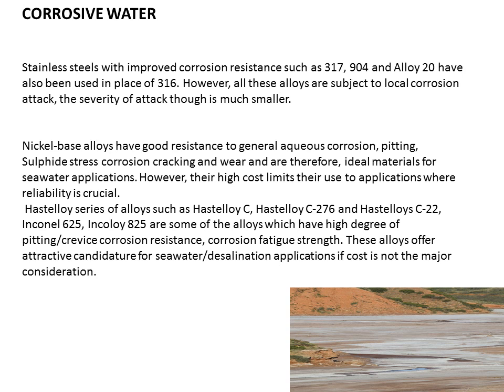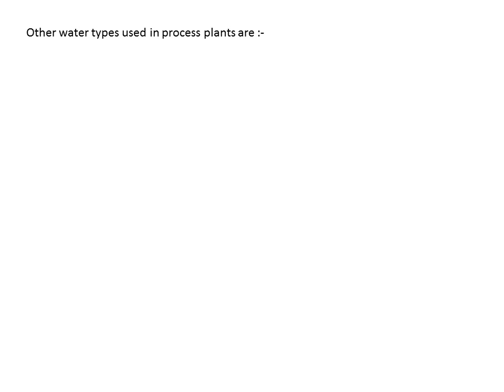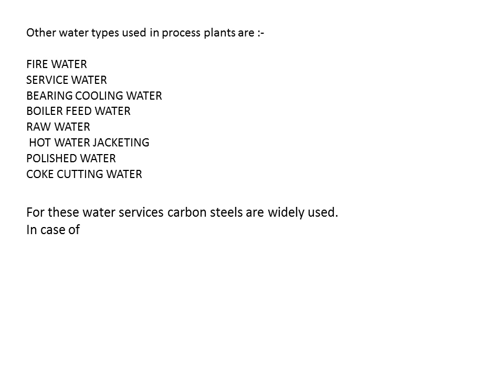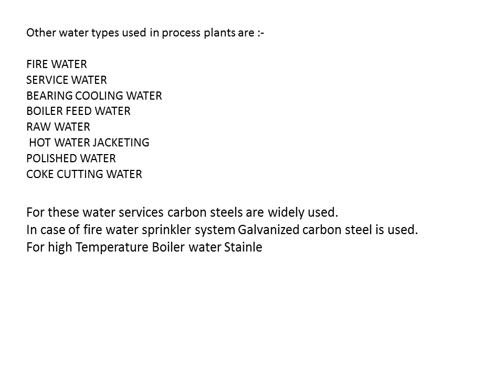Other water types used in process plants include fire water, service water, bearing cooling water, boiler feed water, raw water, hot water jacketing, polished water, and cook cutting water. For these water services, carbon steels are widely used. In the case of fire water sprinkler systems, galvanized carbon steel is used. For high-temperature boiler water, stainless steel or steel with 1.25% chromium is used. This concludes the discussion of water types and the piping materials used for various water services.